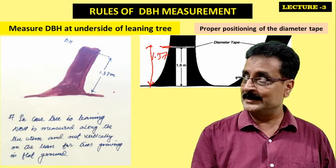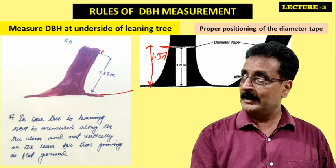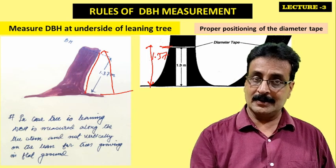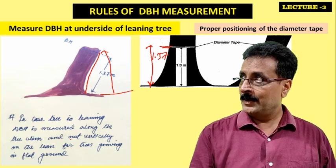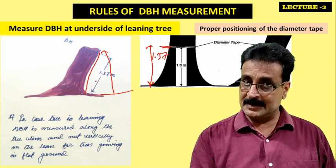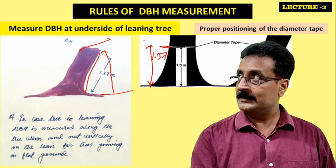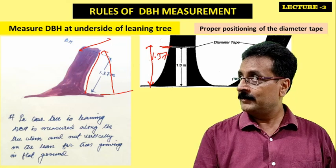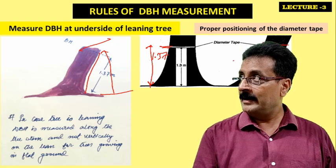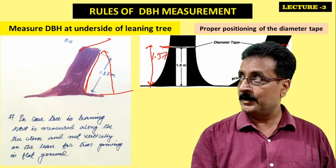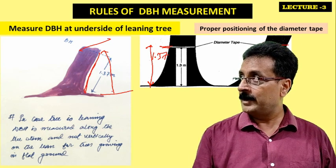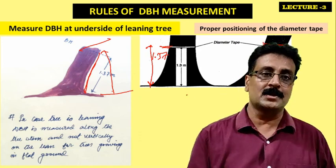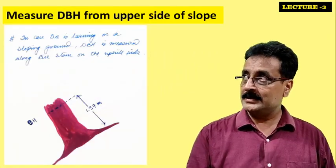When a tree is leaning, we do not measure straight up from the ground. We measure along the stem — that is, along the leaning side. We are not taking the measurement from the vertical; we are taking it along the stem. This is the first rule for diameter measurement of leaning trees.